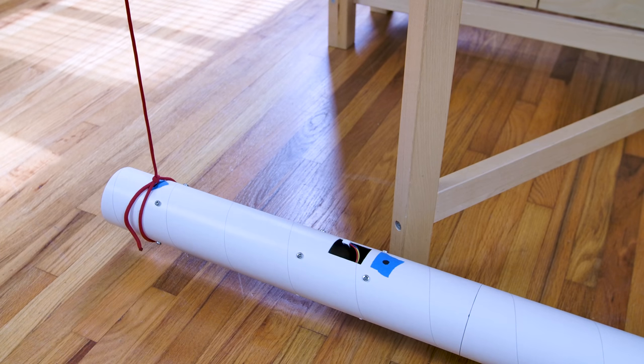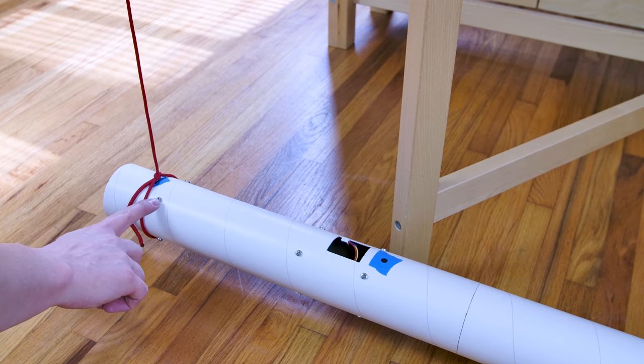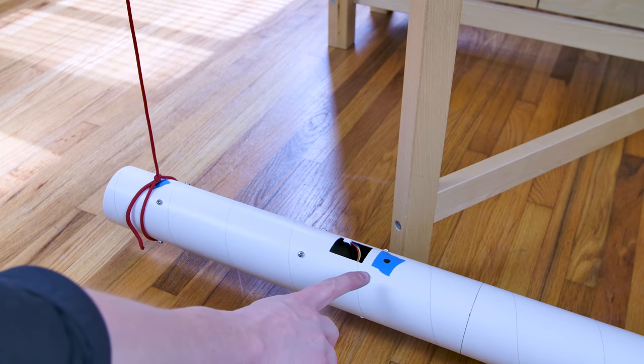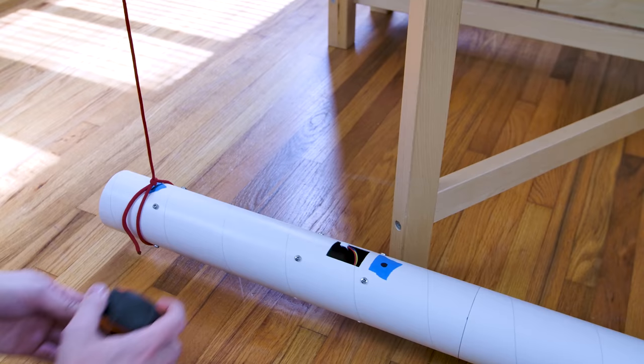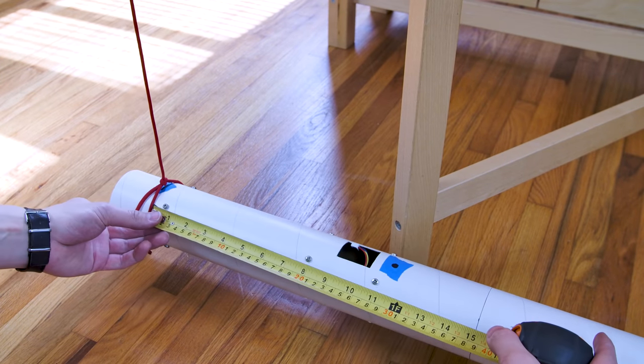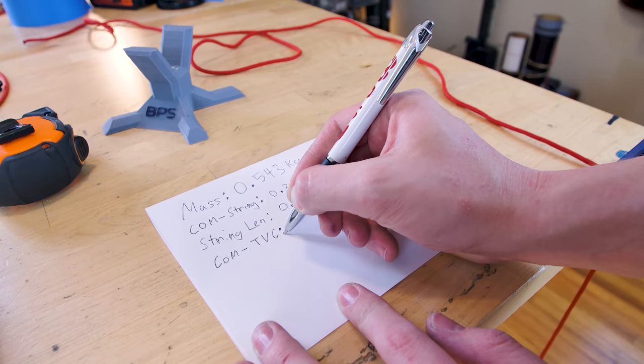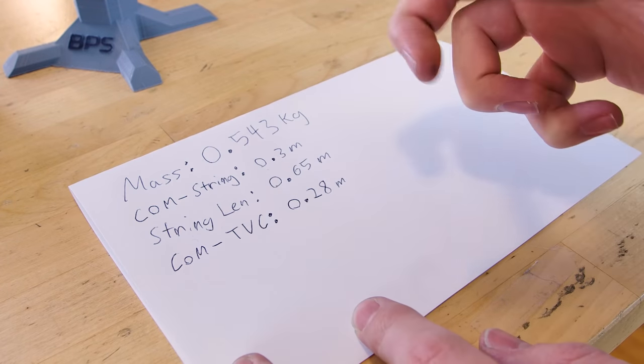Finally, I want to measure the moment arm of the vehicle, which is the distance between the attachment point of the thrust vector control mount and the center of mass where the vehicle will naturally rotate about. Using a tape measure, this comes out to be about 28 centimeters, which I'll notate down once again in meters as 0.28 meters.